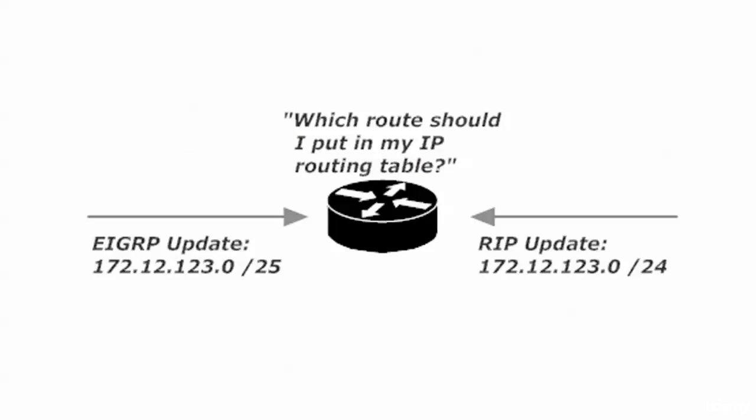Here's an example. Here's a router getting an update for 172.12.123.0, both from EIGRP and RIP. We haven't gotten to EIGRP yet — you don't have to know the ins and outs of EIGRP to understand what we're going to talk about here. The EIGRP subnet mask is one bit longer than the update coming in from RIP. There's nothing wrong with a router running multiple routing protocols — you'll see that in production networks. So this router is running EIGRP and RIP, both hearing about the 172.12.123.0 network. Which route is it going to put into its IP routing table?